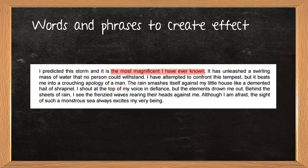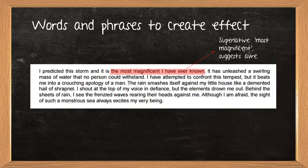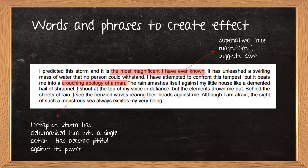That's paragraph four. I've picked out my three quotations from there, and then I'm going to pick out my three quotations from paragraph seven as well. So exactly the same. I think most magnificent I've ever known is quite a good one to describe the storm here. I've picked out, because I've known my terminology, not just any adjective, it's the most magnificent, so it's a superlative. And it suggests a real sense of awe from the writer. He's really in awe of this storm. I quite like to swell for a bit of contrast, the crouching apology of a man, because it's a nice metaphor. It's almost the opposite of personification. It's dehumanised him into a single action, that action of crouching and apologising. It's almost like he's become pitiful against the power of the storm.